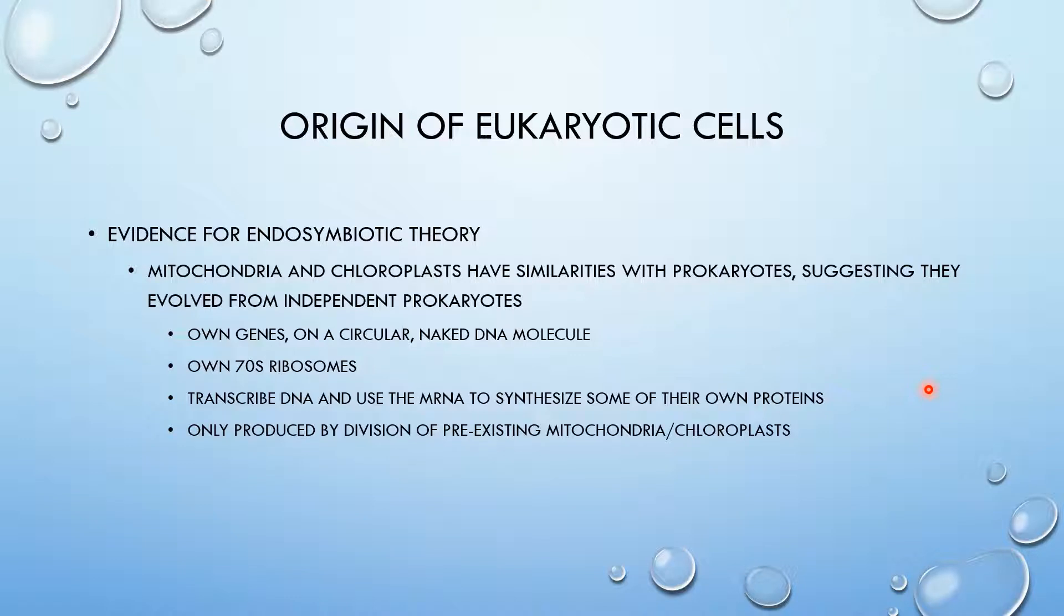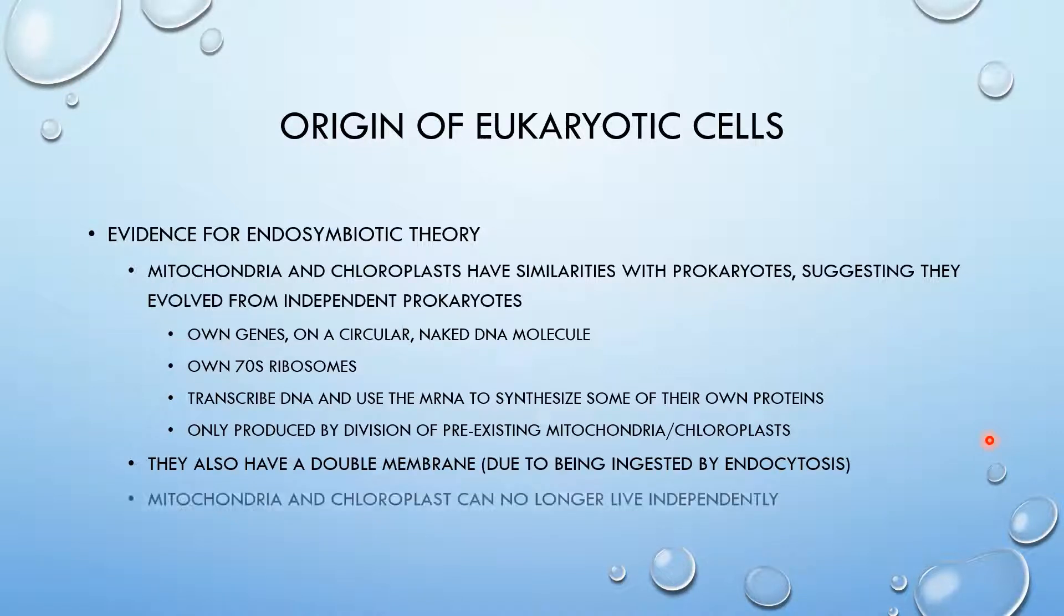And lastly, they're only produced by division of pre-existing mitochondria and chloroplasts. They aren't produced internally inside the cell. They must come from existing mitochondria and chloroplasts. They also have a double membrane, which unlike any other organelle except for the nucleus, is due to being ingested by endocytosis. And endocytosis, I'm pretty sure I went over in the membrane transport unit. So if you guys want to check that out, make sure you guys do. And as you guys are learning bio, you should be making connections from each unit to each unit because it makes it easier for everything to be memorized. And as I said earlier, mitochondria and chloroplasts cannot live independently any longer.